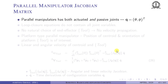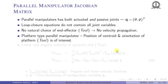The configuration vector q contains both theta (actuated joints) and phi (passive joints). The loop closure equations do not contain all joint variables — for example, in the 3RPS parallel robot, breaking at the spherical joint means the spherical joint variables do not appear. Another important point is that there is no natural choice of end effector, so we cannot do velocity propagation in the serial manipulator sense.